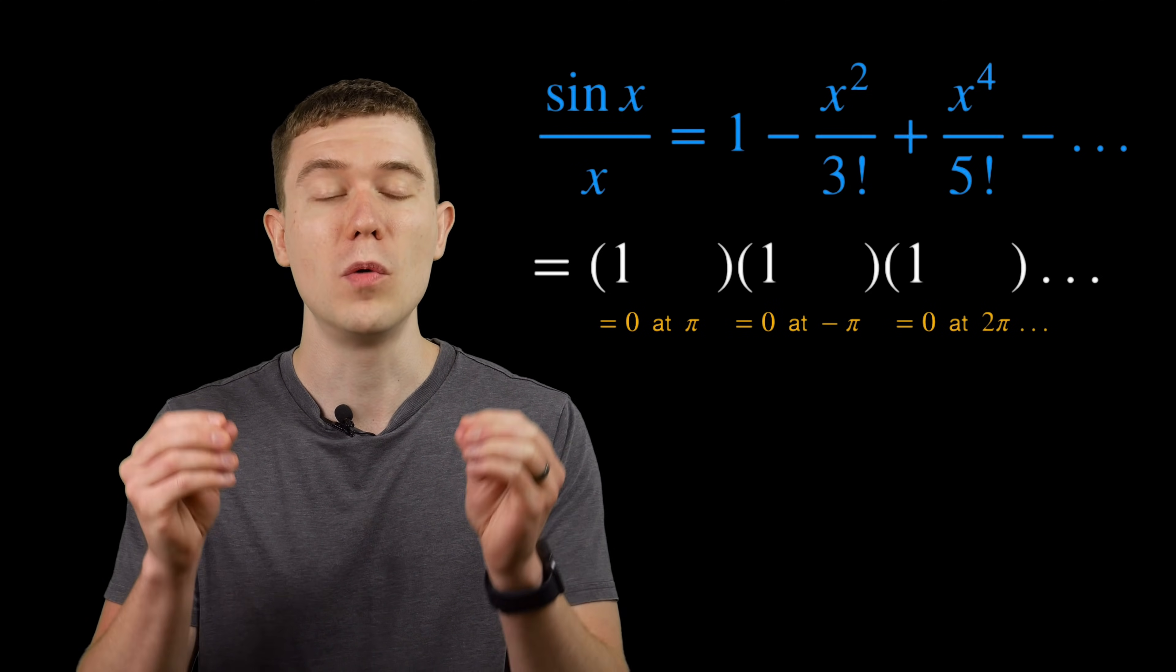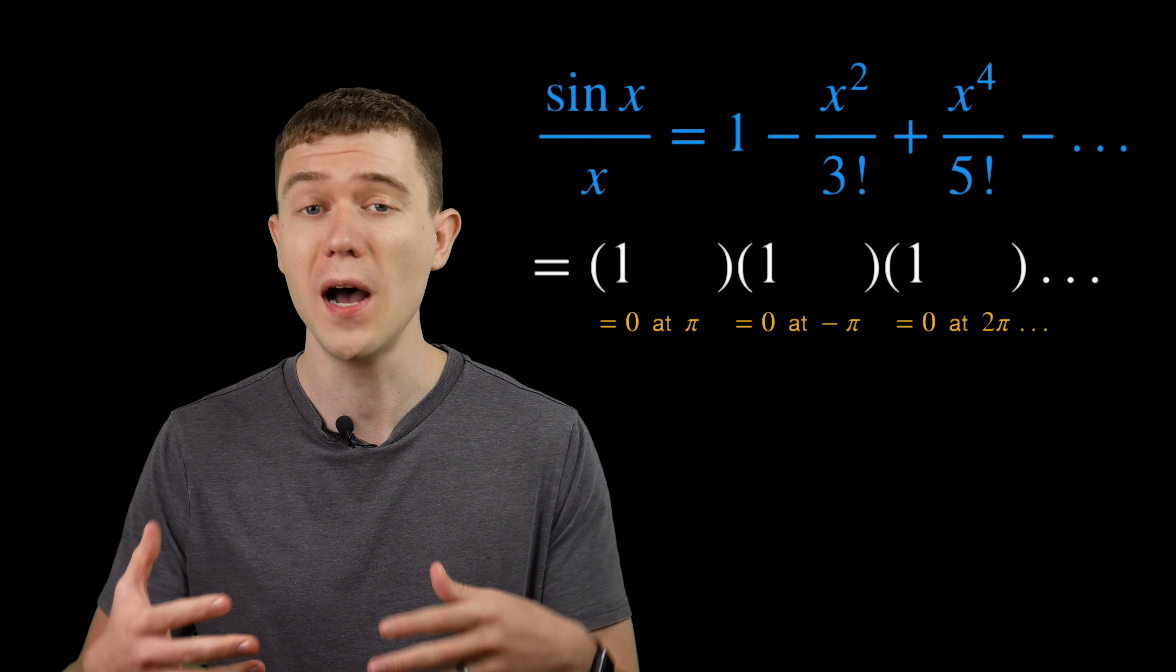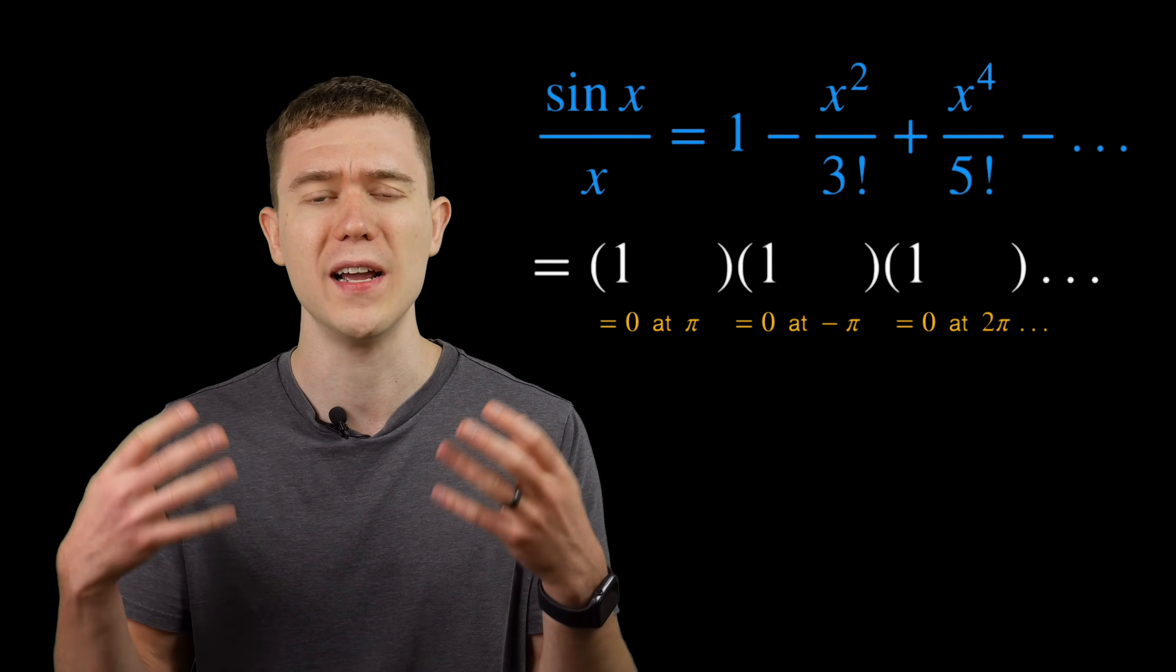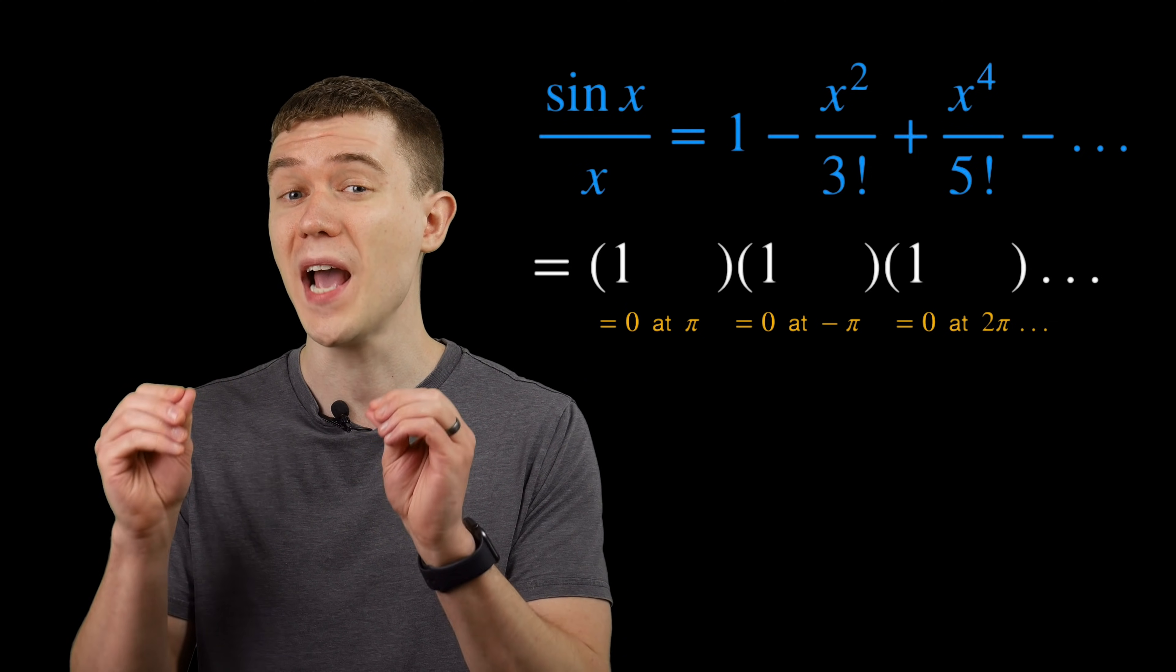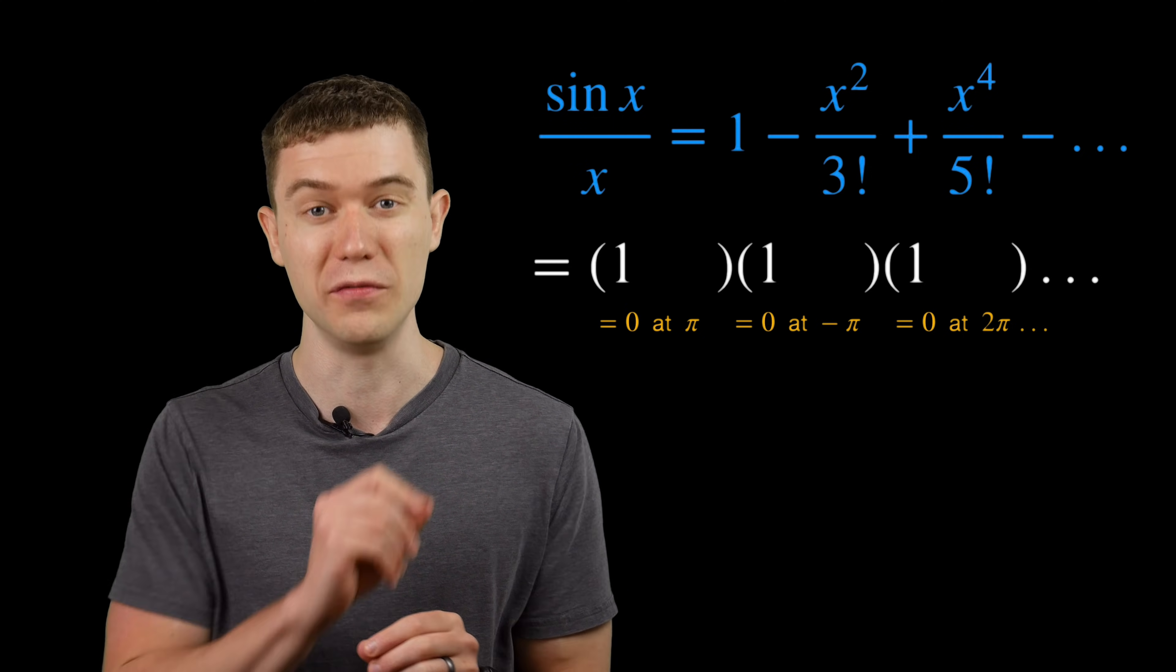In other words, when we plug in plus or minus pi, plus or minus 2 pi, plus or minus 3 pi, and so on for x, we have to get zeros at one of these factors.